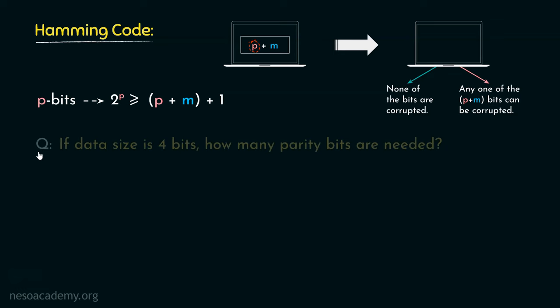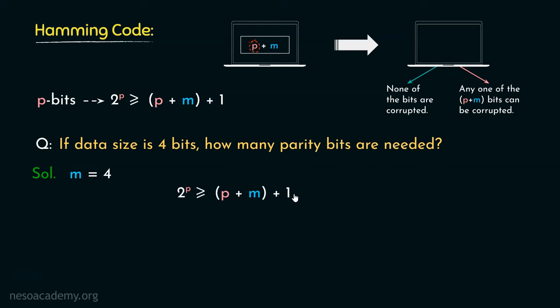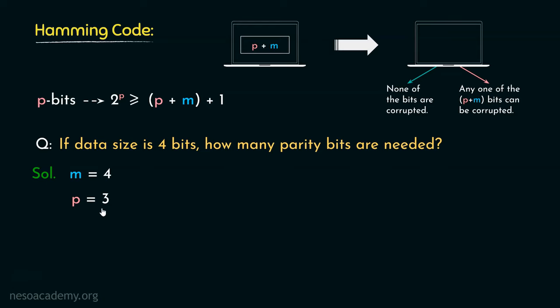Now just to get a hang of it, let's solve this question. Say if the data size is 4 bits, how many parity bits are needed? So according to this question, m is 4. The inequation becomes 2 raised to the power p is greater than or equal to p plus 5. If p equals 1, 2 raised to 1 is 2 and 1 plus 5 is 6 — the inequation fails. If p equals 2, 2 squared is 4 and 2 plus 5 is 7 — again the inequation fails. If p equals 3, 2 cubed is 8 and 3 plus 5 is also 8. So yes, 3 is the value for p. If the data size is 4 bits, then 3 parity bits are needed.